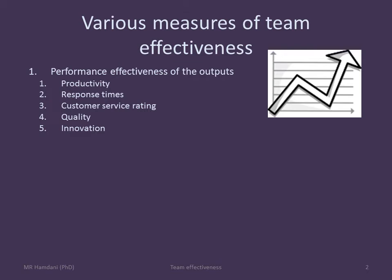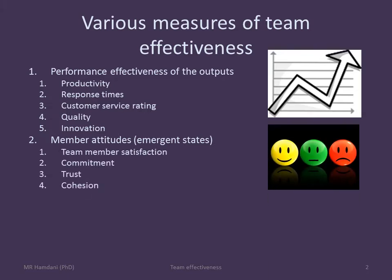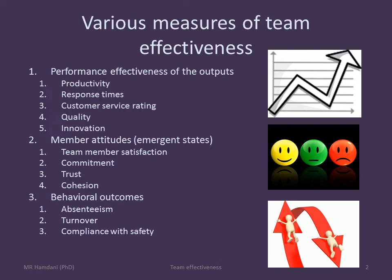The second way to assess team effectiveness is to look for team members' opinions. In this type of survey, you can ask team members for their satisfaction with the team, their levels of commitment, how much trust they have in the team, or the levels of cohesion. All these attitudinal measures can look into the team's emotional or attitudinal states, known as emergent states. Finally, you can also look at behavioral outcomes such as absenteeism, turnover, or compliance with safety in the team.